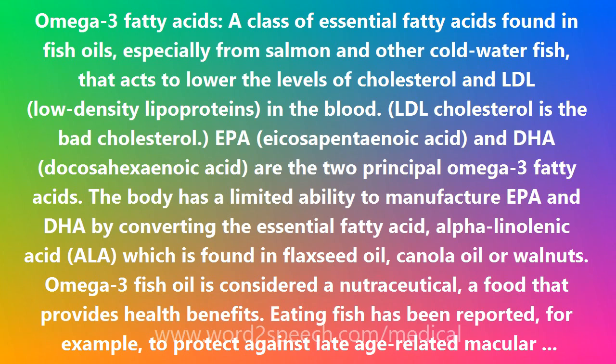EPA (eicosapentaenoic acid) and DHA (docosahexaenoic acid) are the two principal omega-3 fatty acids. The body has a limited ability to manufacture EPA and DHA by converting the essential fatty acid alpha-linolenic acid (ALA), which is found in flaxseed oil, canola oil, or walnuts.